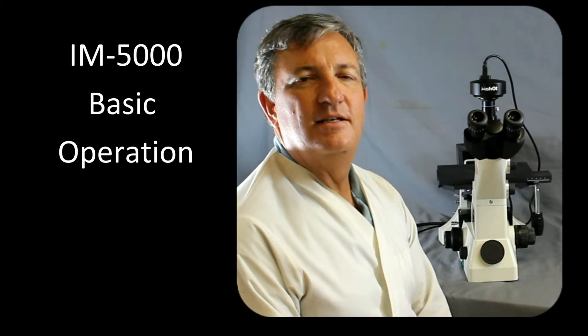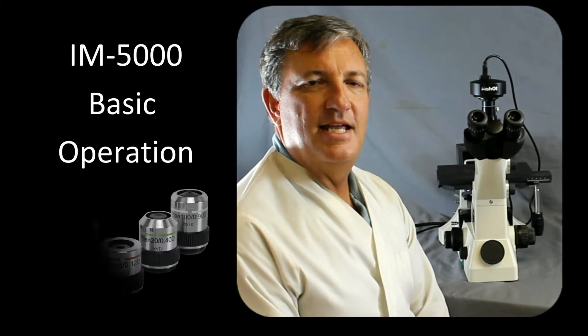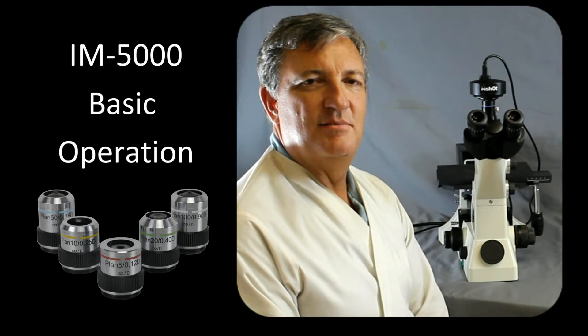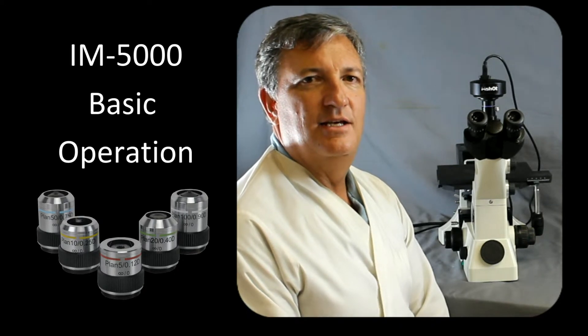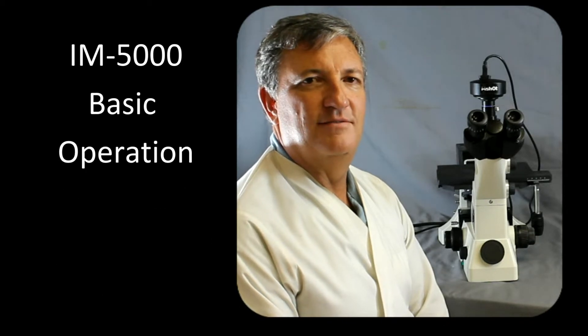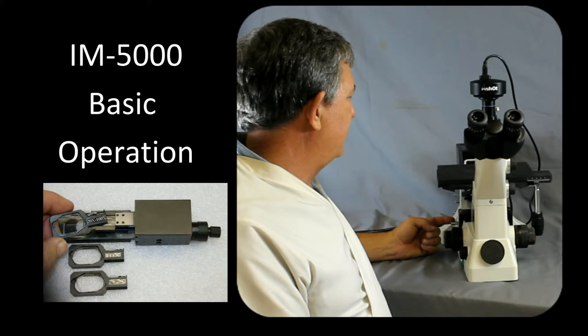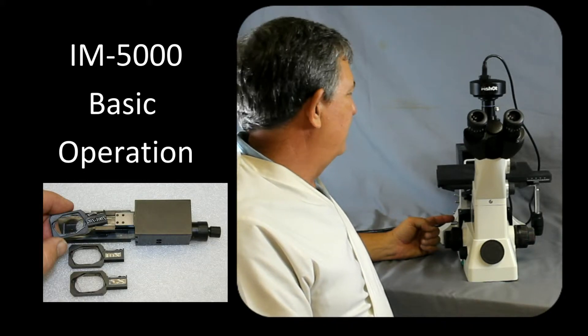The IM5000 uses both bright field and dark field objectives. The standard set of objectives that come with the system include a 5x, 10x, 20x, 50x, and 100x objective lenses. There's also differential interference contrast that can be added with the Nomarski prism.